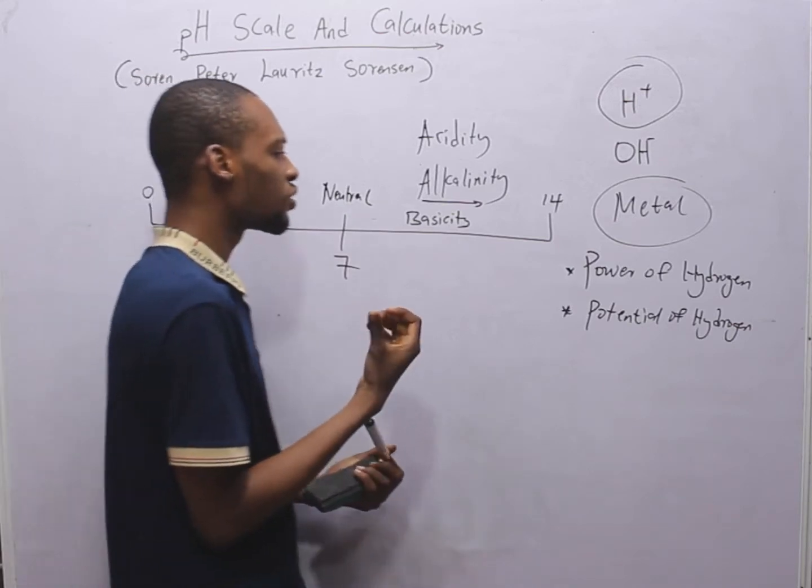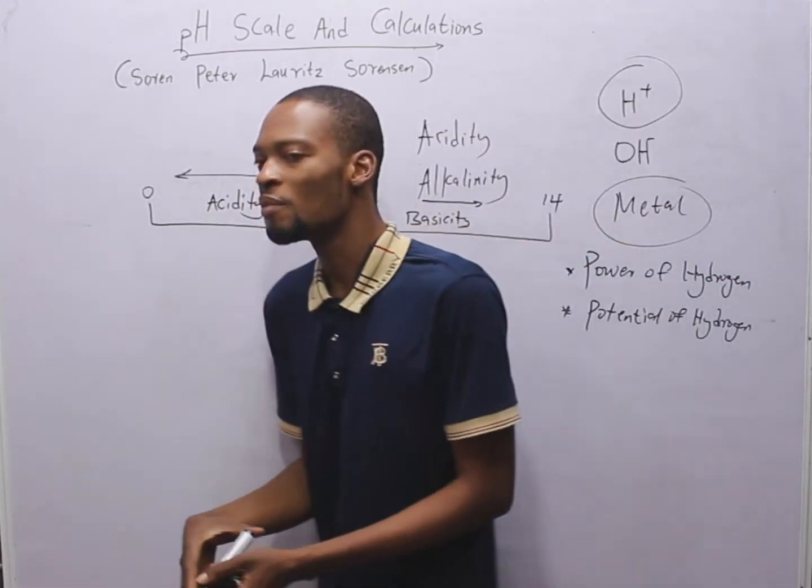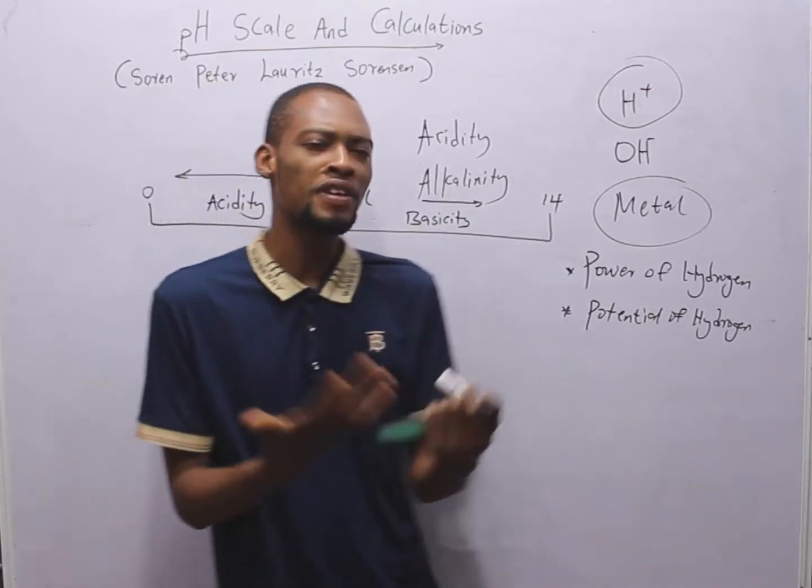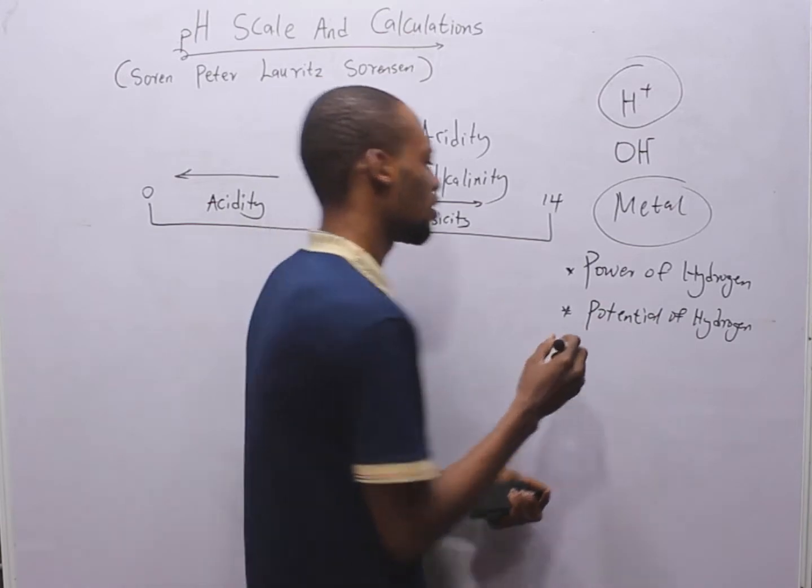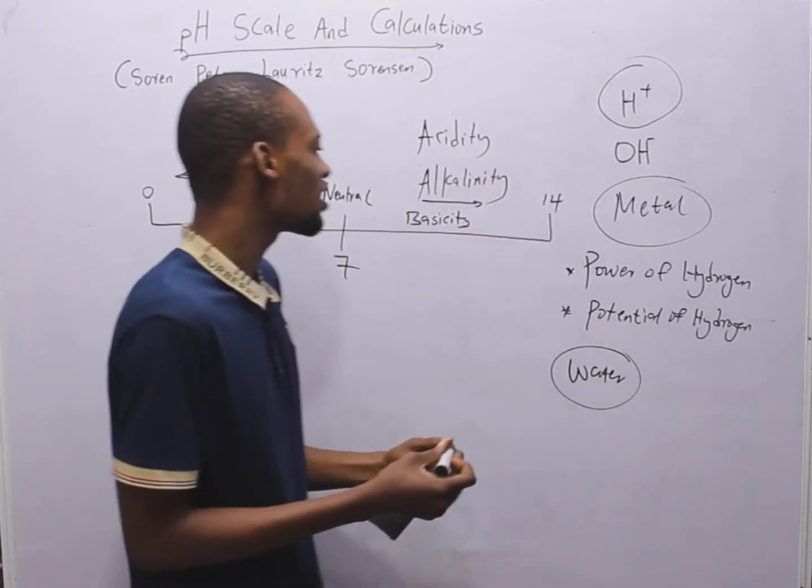So a solution with pH of seven is not an acid and it is not a base, it is simply neutral. What is an example of a neutral solution? Water. Water is simply neutral. It is not acidic, it is not basic.